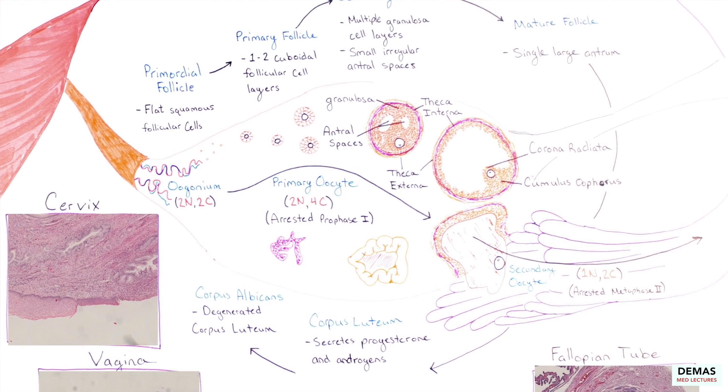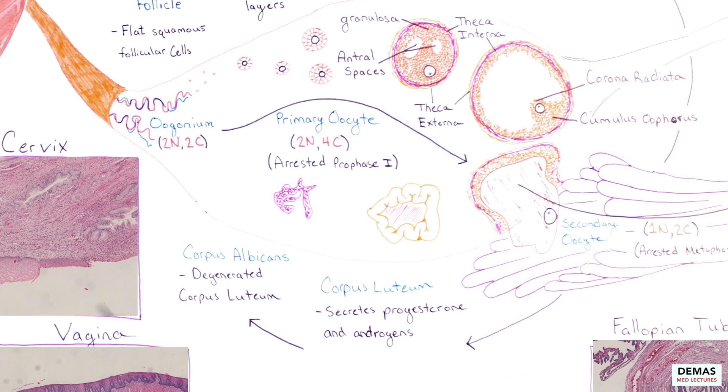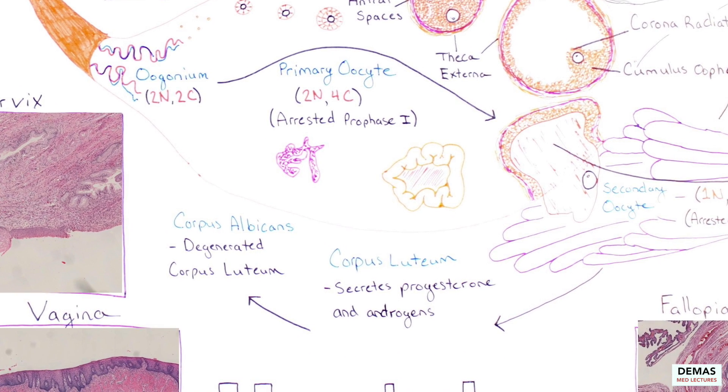Secondary oocytes continue into meiosis II however are arrested in metaphase of meiosis II. Following ovulation, the empty follicle becomes a corpus luteum and secretes progesterone to prepare the uterus for pregnancy. If pregnancy doesn't occur, this structure degenerates to form a corpus albicans.